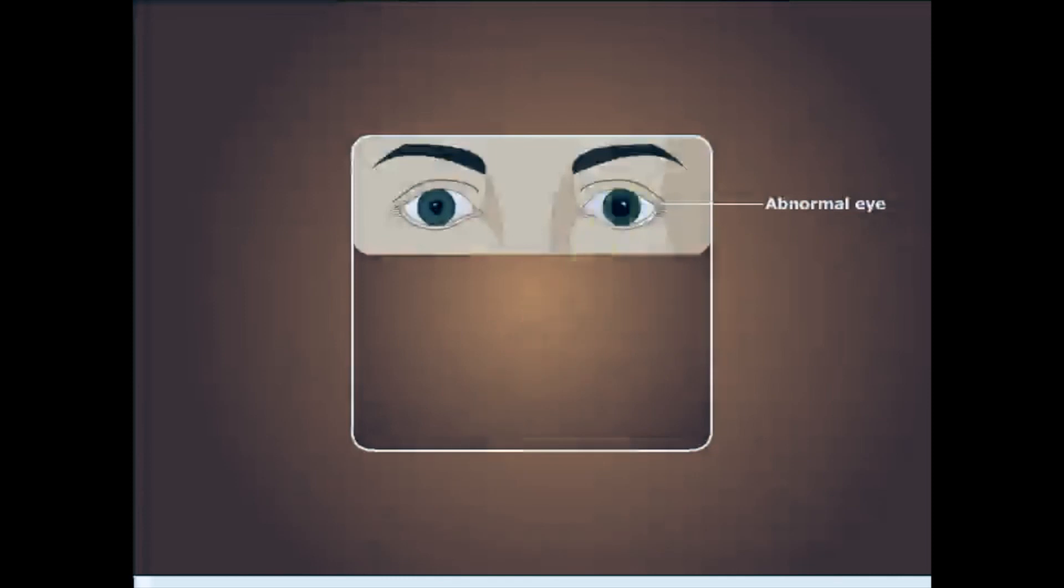The Adie pupil responds better to accommodation than it does to light. The pupil constricts in response to accommodation with delayed dilation. The most characteristic feature is that once the pupil has constricted, it tends to remain tonically constricted and redilates very slowly.